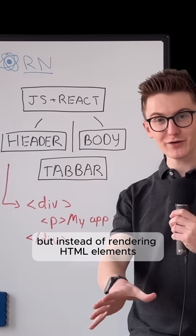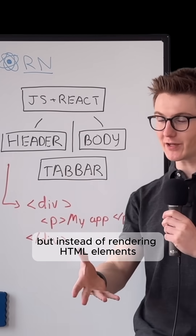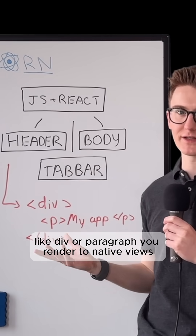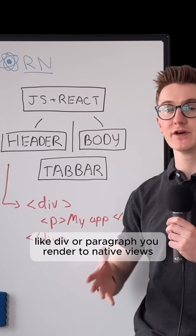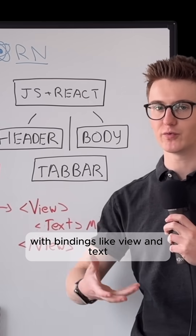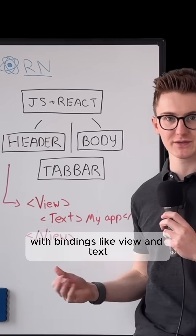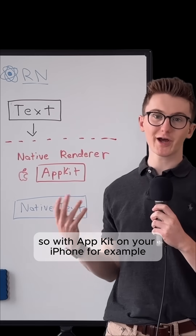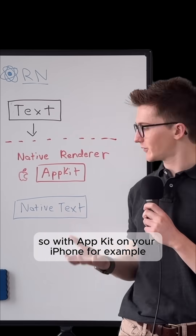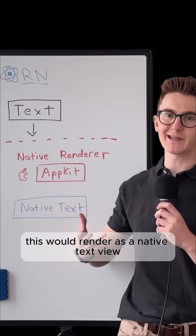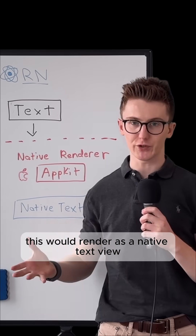But instead of rendering HTML elements like div or paragraph, you render to native views with bindings like view and text. So with AppKit on your iPhone, for example, this would render as a native text view.